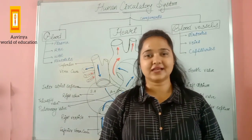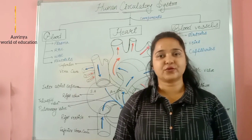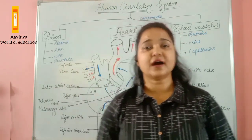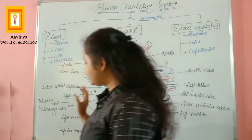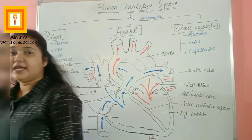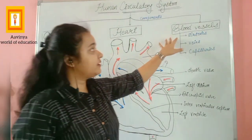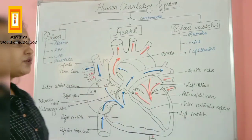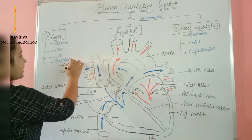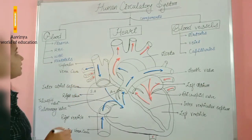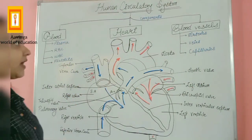Hello everyone, my name is Alka Singh. Today we are going to discuss the human circulatory system, also known as the cardiovascular system. This system consists of three components: blood, heart, and blood vessels. Blood is made up of plasma, RBC, WBC, and platelets. Blood is the circulatory fluid.